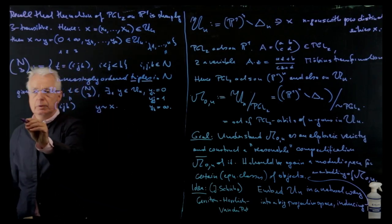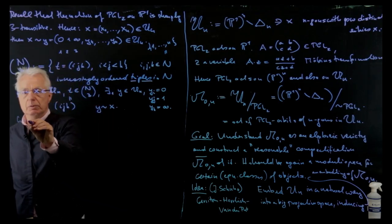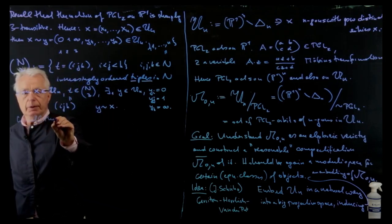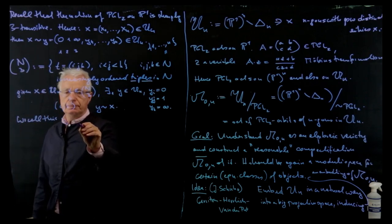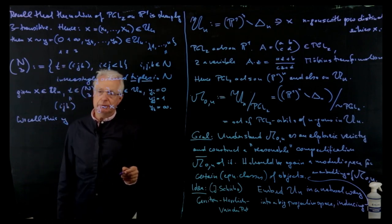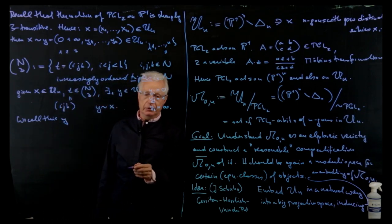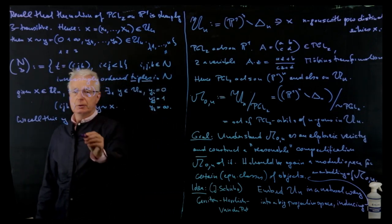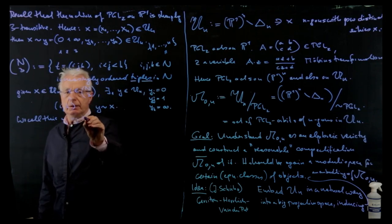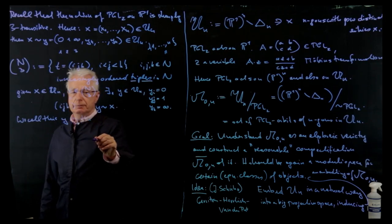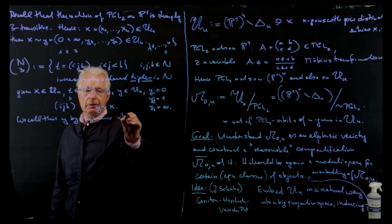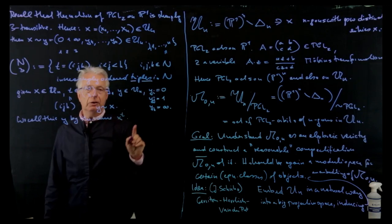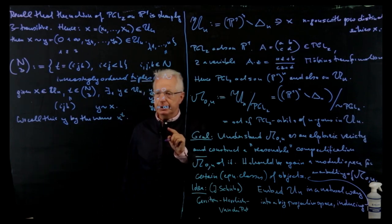That brings us to a set T of triples: T equals ijk — these are ijk in N, ordered increasingly ordered triples, in our label set N which is 1 up to n. I don't want to write 1 up to n because we will work abstractly with any finite set. Given x in Un and T in N-choose-3, by the sharp 3-transitivity of our action there exists a unique y in Un with yi = 0, yj = 1, and yk = infinity, and this y will be PGL2-equivalent to x.